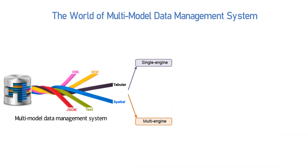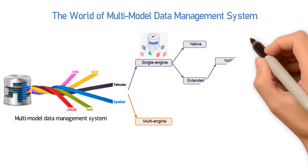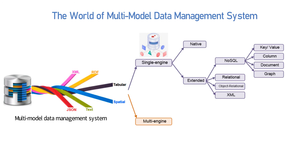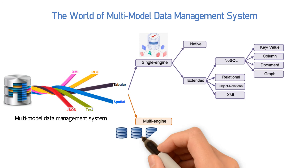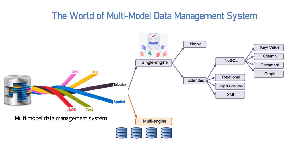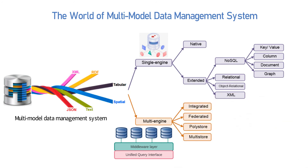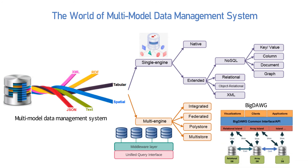The world of multi-model data management systems can be divided into single-engine and multi-engine systems. Single-engine means one engine can support various models, and this category can be further classified into native and extended multi-model databases. By contrast, multi-engine utilizes multiple engines to manage their respective models. A middleware layer is then needed to integrate different databases and provide a unified query interface. Multi-engine can be classified into integrated, federated, polystore, and multi-store systems. BigDog is an example of a polystore system.